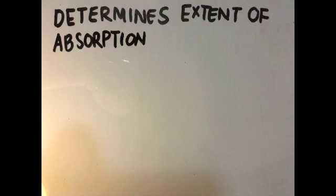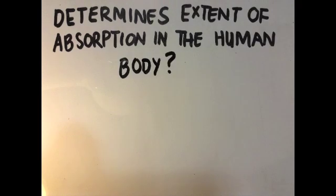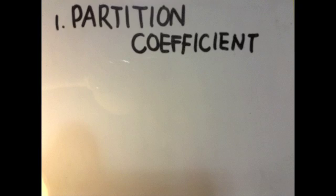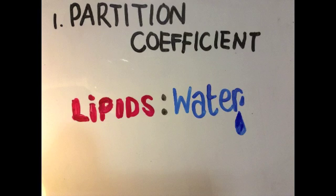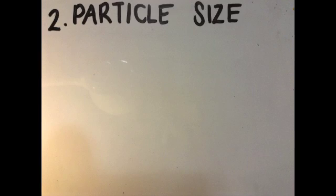The following properties will determine the extent of absorption in the human body. Partition coefficient - this is the ratio of the distribution of a drug in lipids as compared to water. An increase in the partition coefficient would result in an increased ability of a drug to distribute into lipid membranes, thus improving absorption.